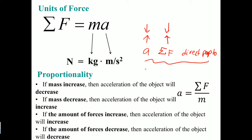Mass and acceleration have an inverse proportion relationship — if one goes down, the other goes up; if one goes up, the other goes down. That's what it means to be inversely proportional.